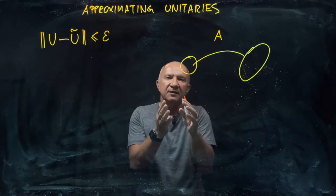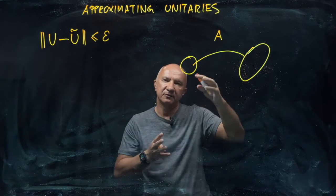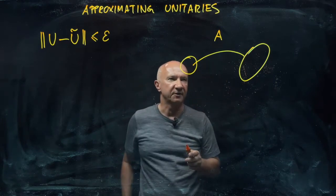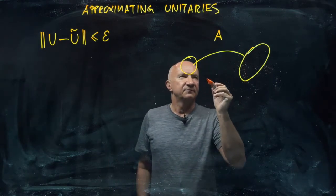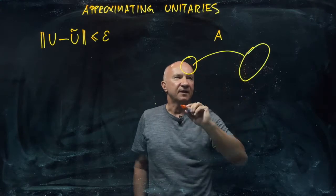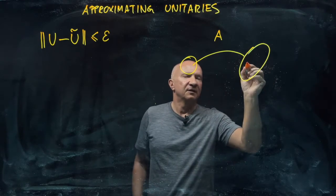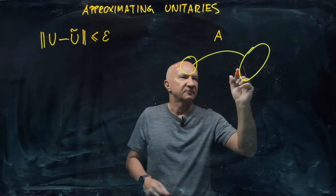So a being a linear operator will just rotate this unit ball, but may also stretch it or contract in some directions. So the norm of a is essentially the largest stretch that you see in the vector space.